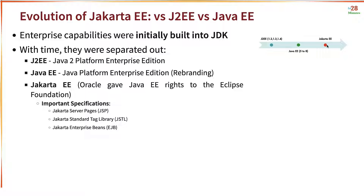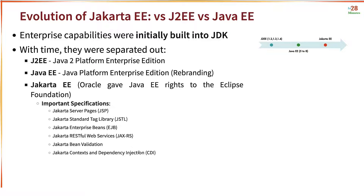You also have EJBs, now called Jakarta Enterprise Beans. There are also specifications for how to build a REST web service — this is JAX-RS, or the Jakarta RESTful Web Services specification. You also have Bean Validation Specifications, and CDI — Jakarta Context and Dependency Injection — which is the API for Dependency Injection. The first version of Spring Framework was introduced in 2004, and as Spring became popular, Dependency Injection became popular too — which is where CDI was introduced.